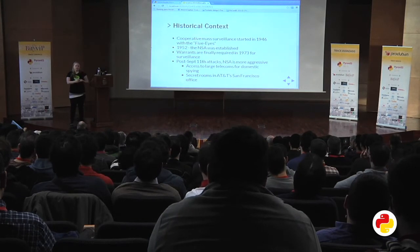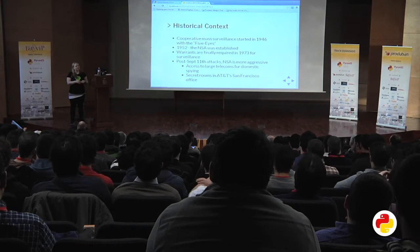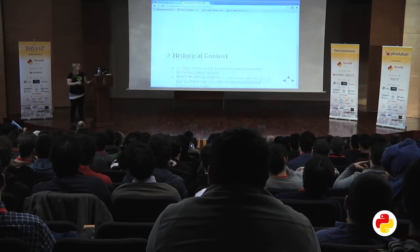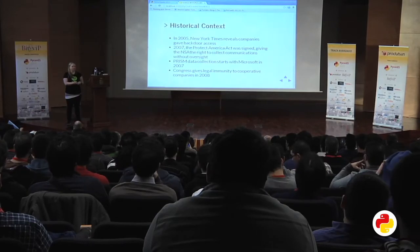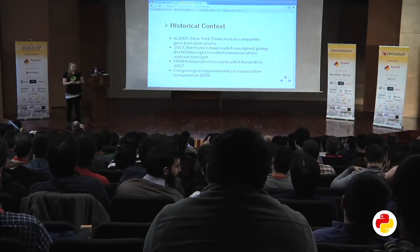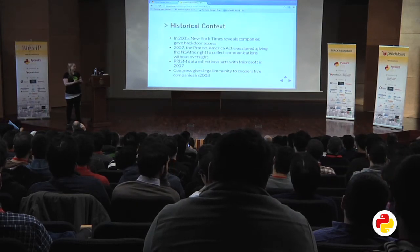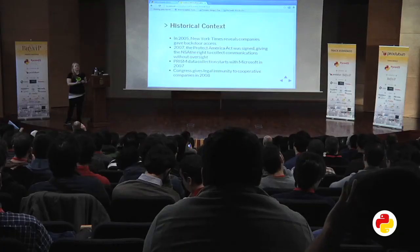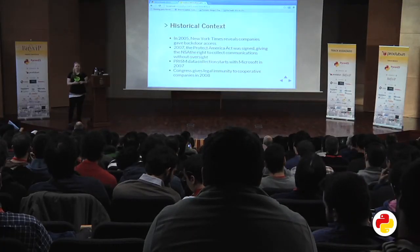After the September 11th attacks, the NSA got a lot more aggressive with domestic and international spying, including parking themselves within telecoms — widely known is the secret room in the AT&T office in San Francisco. In 2005, the New York Times revealed that companies were giving backdoor access to the US government and to the NSA. In 2007, the Protect America Act was passed, giving the NSA the right to collect communications without oversight. PRISM data collection started in 2007 with Microsoft, and in 2008 Congress gave compliant companies legal immunity for spying on users.